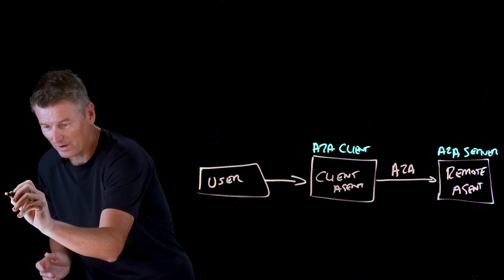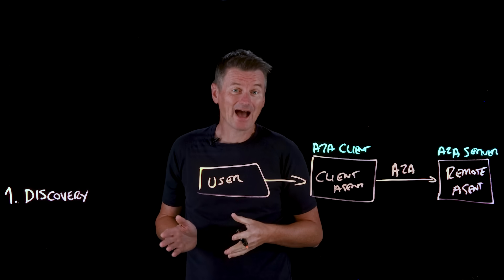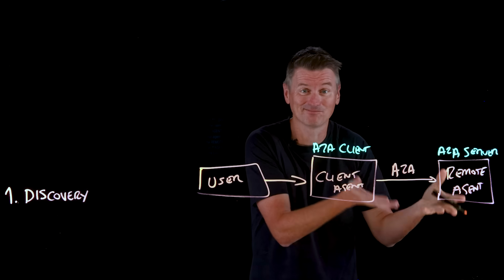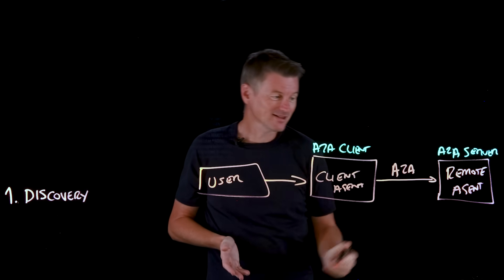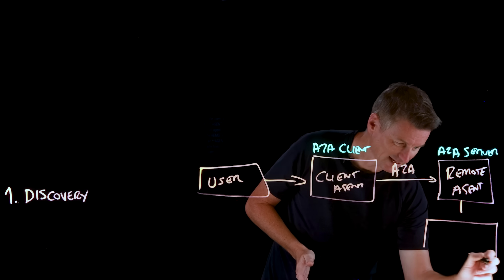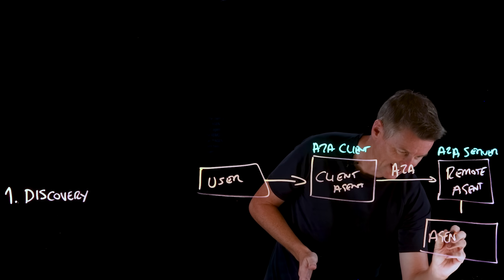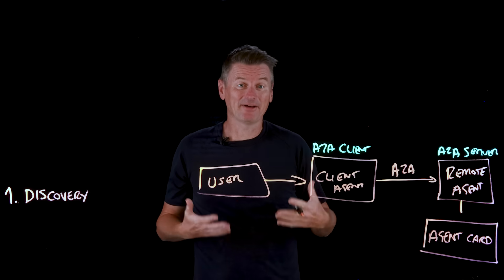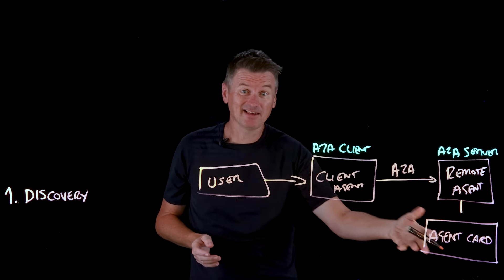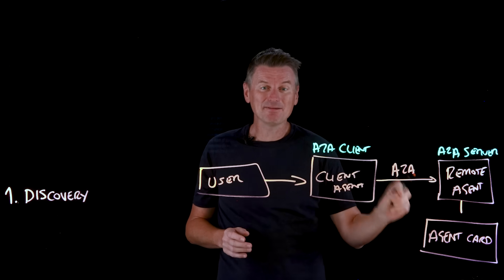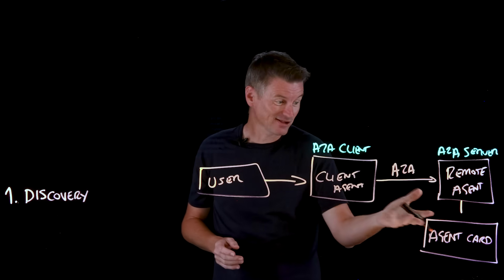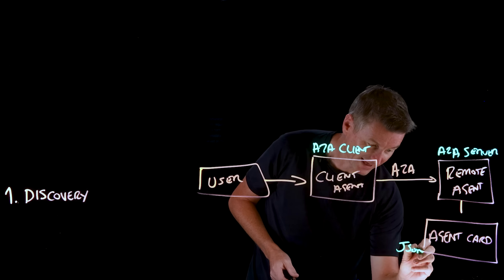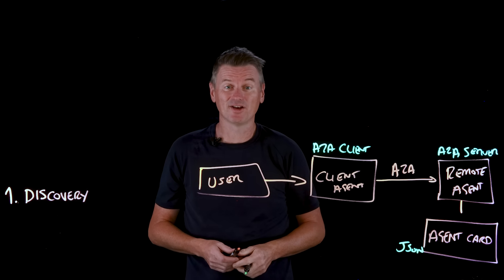Let's look at three stages, starting with stage one: discovery. How does the client agent find the remote agent and figure out what that agent can actually do? The remote agent publishes something called an agent card. That contains basic information about the agent — its identity, its capabilities, its skills — along with a service endpoint URL that enables A2A communication and some authentication requirements. All of this takes the form of a JSON metadata document served on the agent's domain.